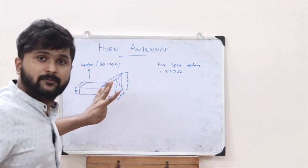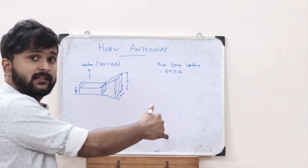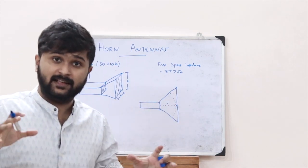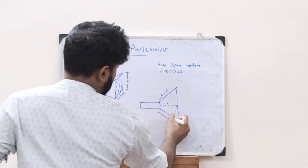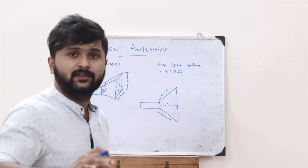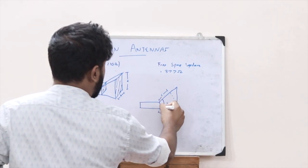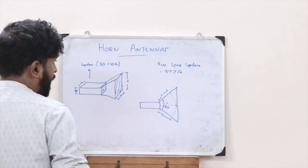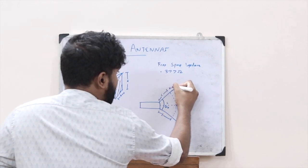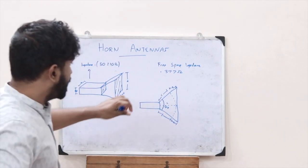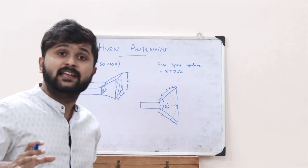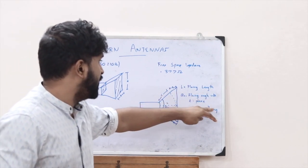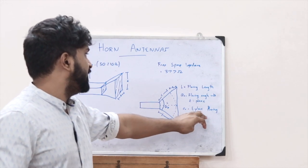When we observe this horn antenna from the side view, the length L is referred to as the flaring length of this horn antenna. The angle theta E is referred to as the flaring angle with respect to the E plane, that is the electric field plane. And the small distance delta E is the E plane flaring difference.